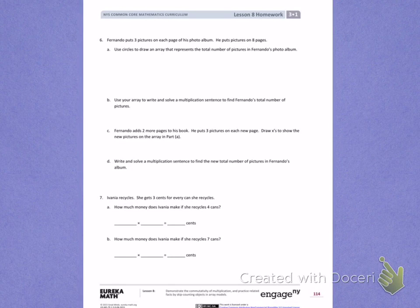This is Module 1, Lesson 8. Today's objective was to demonstrate the commutativity of multiplication and practice related facts by skip counting objects in array models.